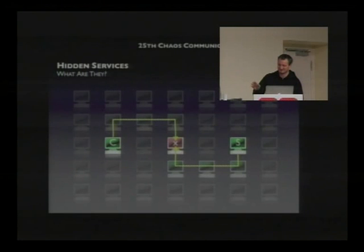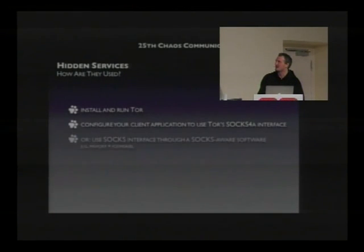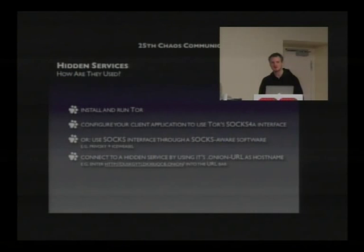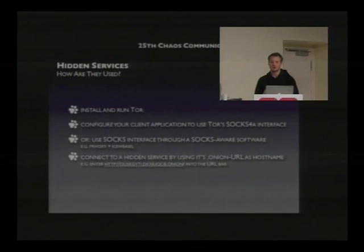Tor is quite slow, so it takes a while. How are hidden services used? If you need to access a hidden service, you need a running Tor installation and software that uses the Tor SOCKS interface — either through SOCKS-aware libraries or software that uses the Tor SOCKS interface directly. If an onion address is detected, Tor will simply intercept the request and route the connection into the Tor network to the hidden service.